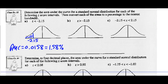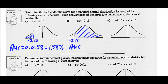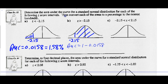For a Z-score greater than negative 2.15: we already know the area left of negative 2.15 is 0.0158. To find the area to the right, we go 1 minus 0.0158, which equals 0.9842. That makes sense — this looks like about 98% of the data. As a percentage, 98.42%.